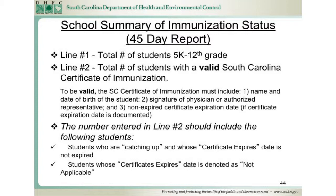On line number 2, enter the total number of students with a valid South Carolina Certificate of Immunization. To be valid, the South Carolina Certificate of Immunization must include: 1, the name and date of birth of the student; 2, the signature of the physician or authorized representative; and 3, if a certificate expiration date is documented, a non-expired certificate expiration date. The number entered in line number 2 should include students who are catching up — that is, students who are not yet up to date on their immunization requirements and the date when their next immunization is due is denoted on the certificate expires space.